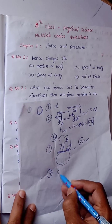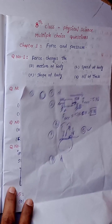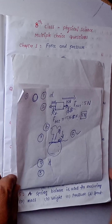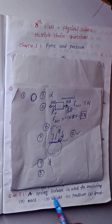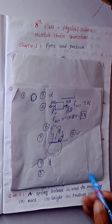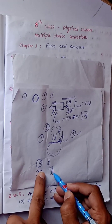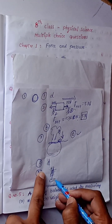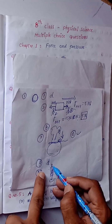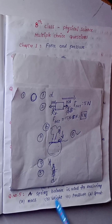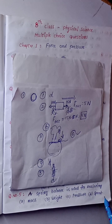Question number 5: A spring balance is used for measuring. We can measure the weight of the object — not mass, not pressure, not speed. We can measure weight.